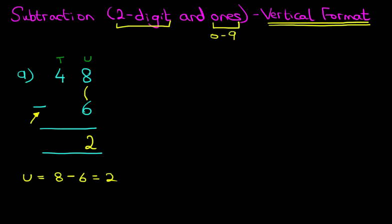Next we have the tens column. In the tens column we've got 4 minus, well there's nothing over here, so let's do the workings as well. 4 minus 0 equals 4. And that is our answer. 48 minus 6 equals 42. It really is that simple.